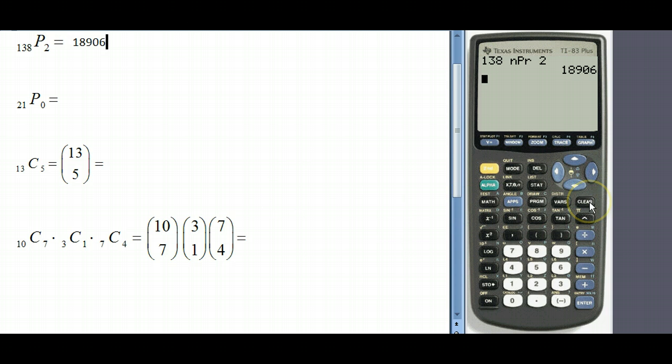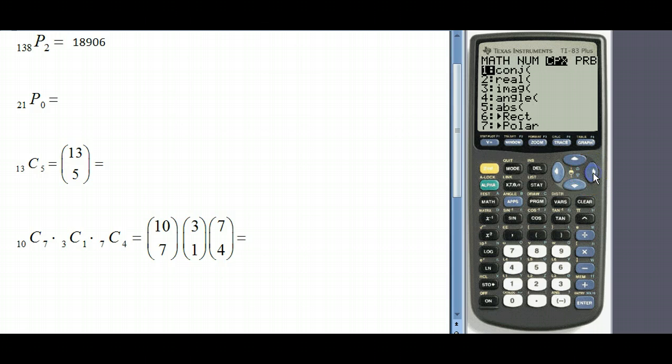Let's move on to the next one. So now we want to take the permutation of 21 things and group them in groups of zero. The answer to this is one and this is more of a theoretical type problem, but I want to show you how to do the calculation. So again we start with 21, math, go to probability, select option two, hit zero, and you see the answer is one.